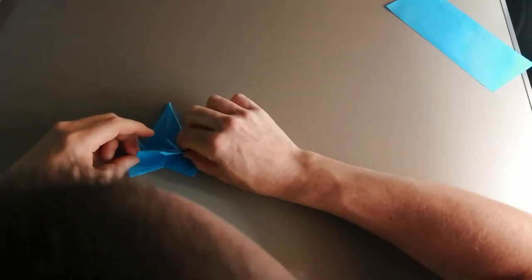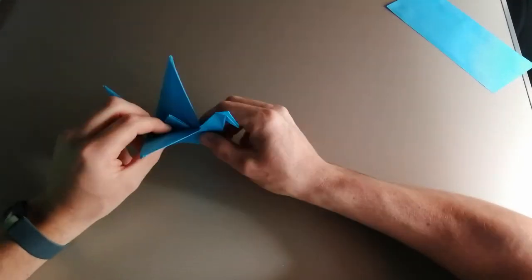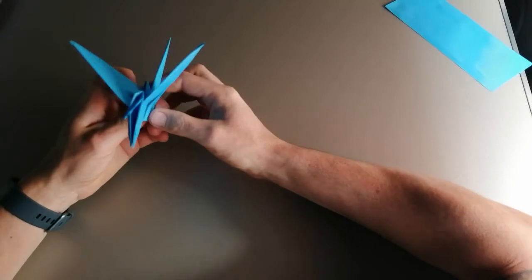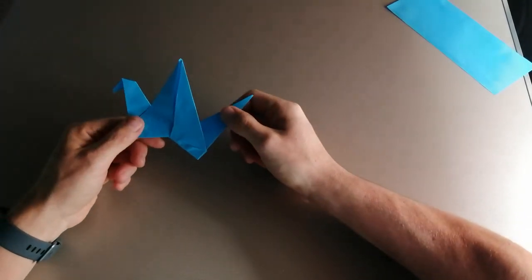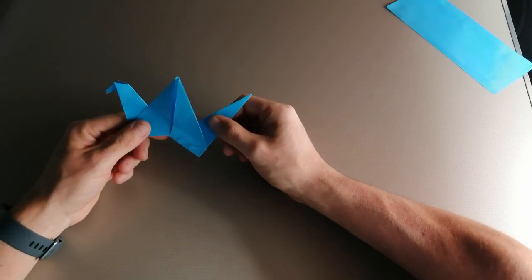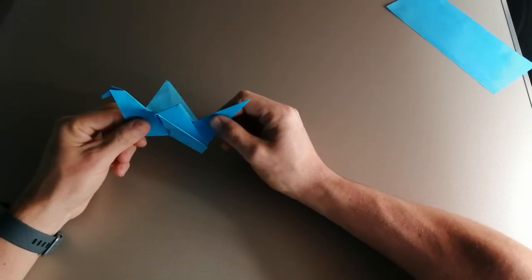And then exactly the same on the other side, holding the wing down until it's in line with the neck. Again, not doing a strong crease. Holding the neck and the tail and popping this back will make the bird flap its wings.